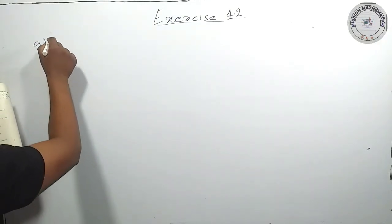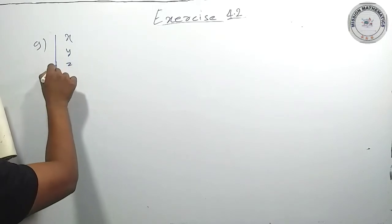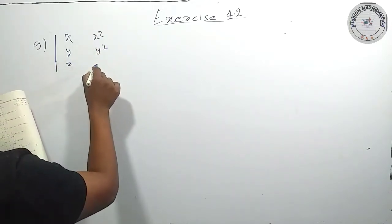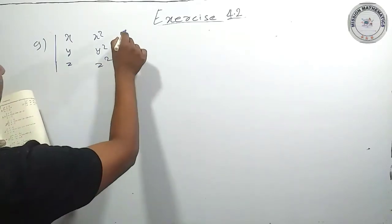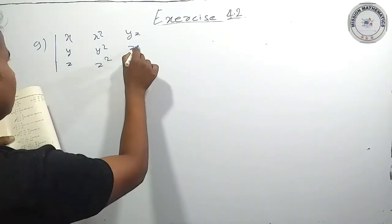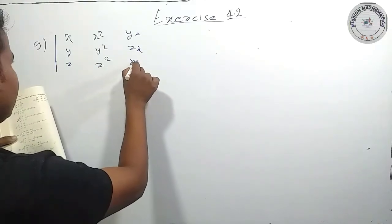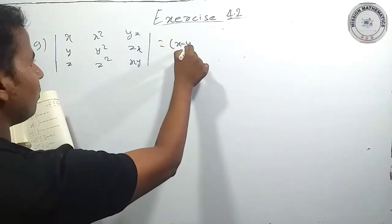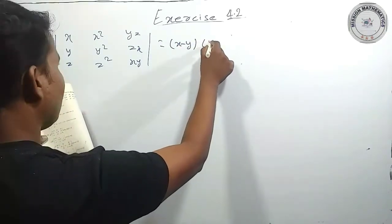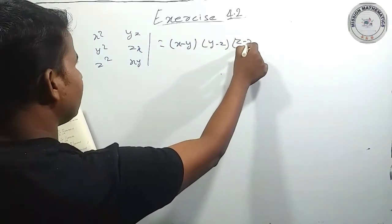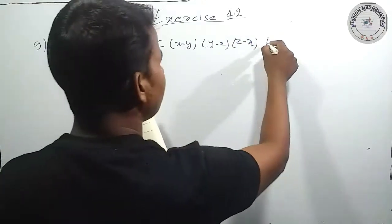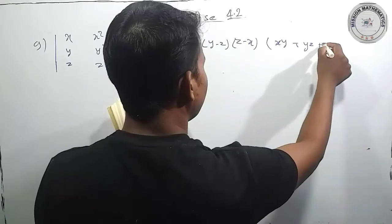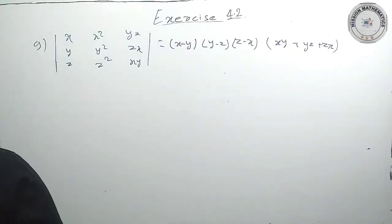In a determinant with rows: first row x, y, z; second row x², y², z²; third row yz, zx, xy — we have to prove this equals x minus y into y minus z into z minus x into xy plus yz plus zx.